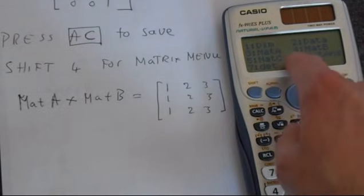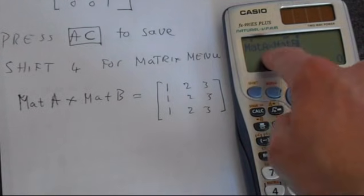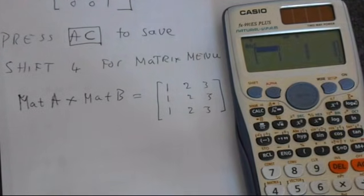So we press shift 4. And we want matrix B. So that's number 4. And then we've got matrix A times matrix B. And we press equals.